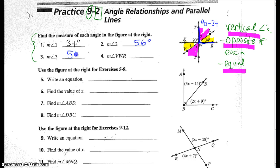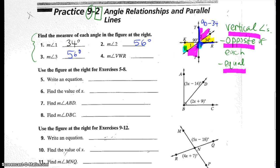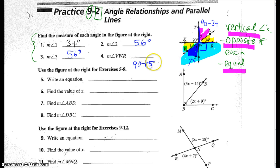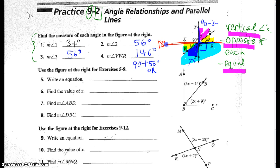So for number 3, I also got 56 degrees. And then for angle 4, I'm looking for VWR — this angle here. This angle is creating an obtuse angle, so I definitely know it's going to be greater than 90. It is 90 degrees plus the measure of angle 3, so that would be 90 plus 56 degrees, which makes 146 degrees. Or some of us took the entire line — 180 degrees — and subtracted the measurement of angle 1, which is 34 degrees, which totaled 146 degrees again.